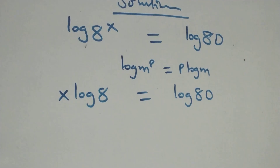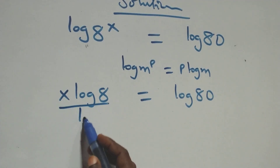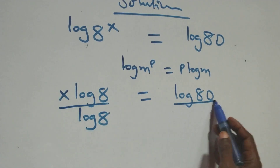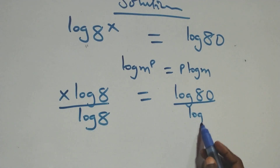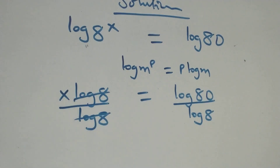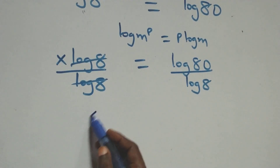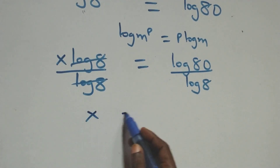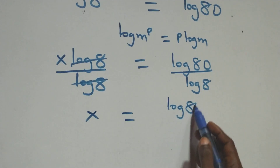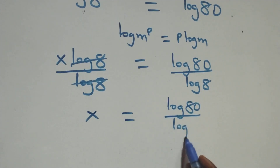The next step, we divide both sides by log 8 — divide this side by log 8, and also divide this side by log 8. So log 8 cancels each other, and we have x equals to log 80 over log 8.